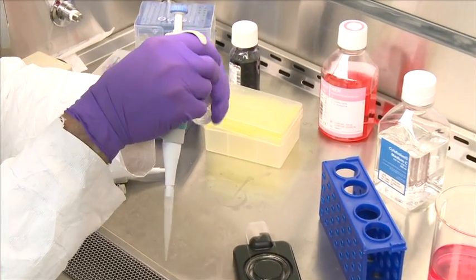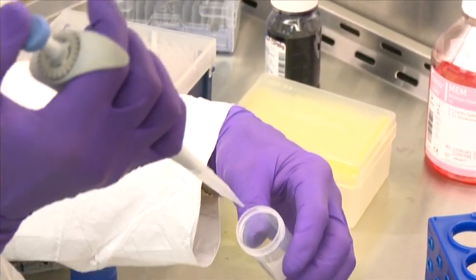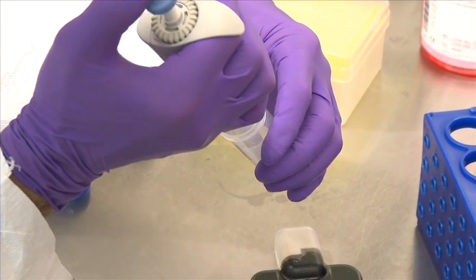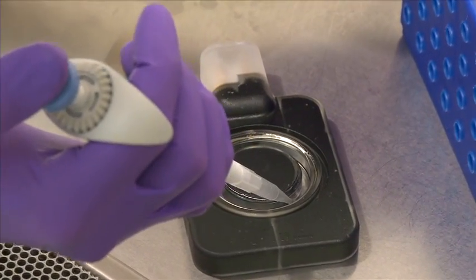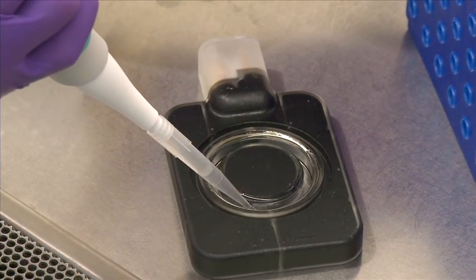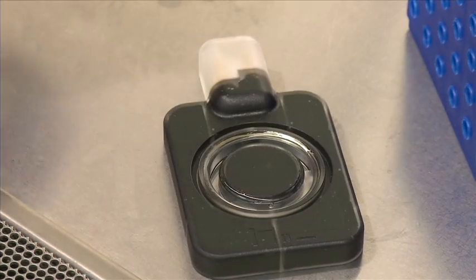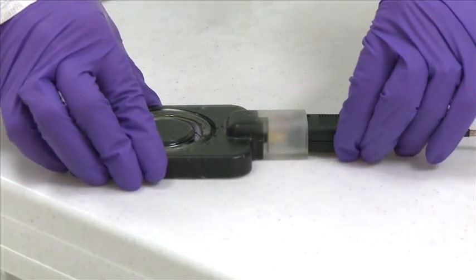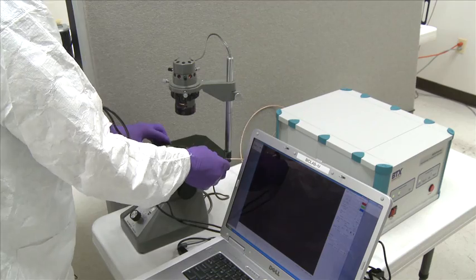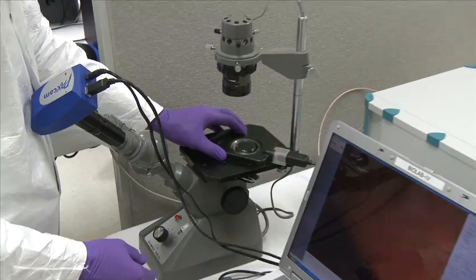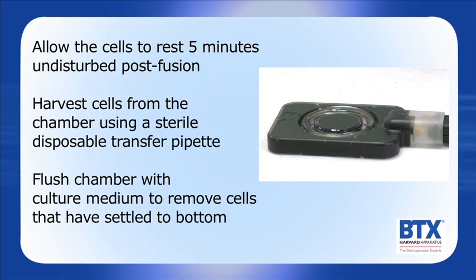Carefully pipette the resuspended cells into the chamber. Add 2 mL of cells to the 2 mL chamber, or up to 9 mL of cells to the 9 mL chamber. The fusion should be performed within 30 seconds after adding cells to the chamber because of settling. Connect the chamber to the HYBRAMUN chamber connection cable and move the chamber to a microscope. If using the 2 mL chamber for optimization, run the HYBRAMUN protocol. View the cell alignment to verify fusion. Allow the cells to rest 5 minutes undisturbed post-fusion.